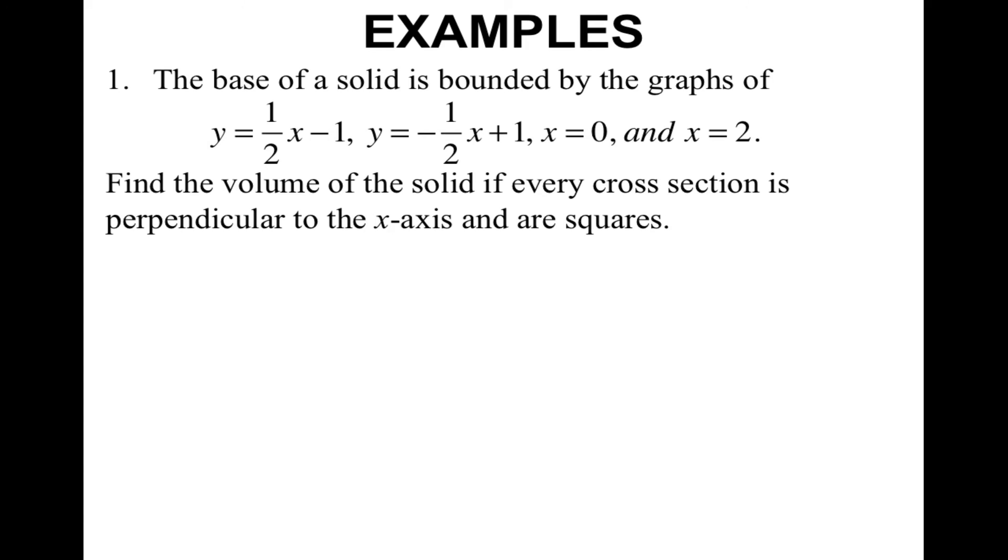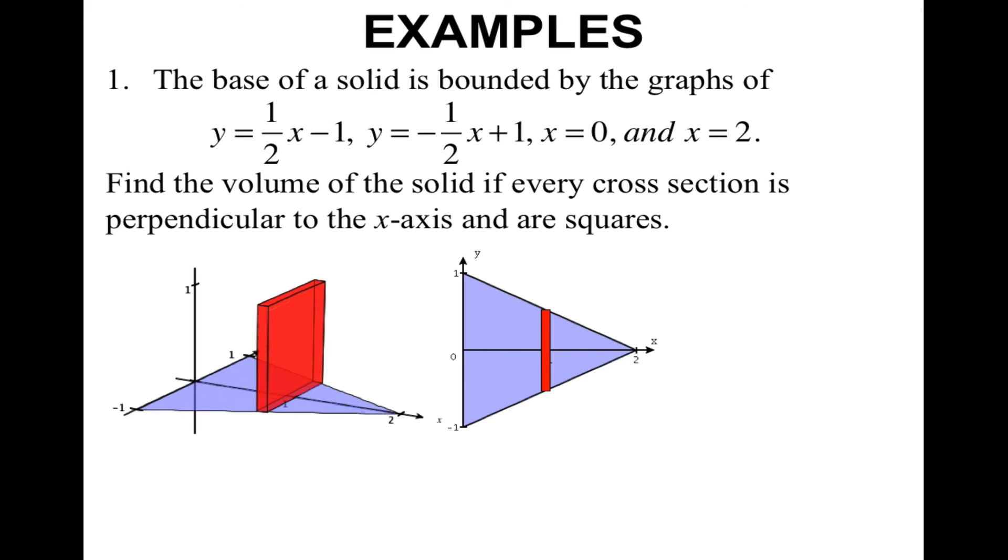Let's look at an example. The base of a solid is bounded by the graphs of y equals 1/2 x minus 1, y equals negative 1/2 x plus 1, x equals 0, and x equals 2. Find the volume of the solid if every cross-section is perpendicular to the x-axis and are squares. This actually is our pyramid example.